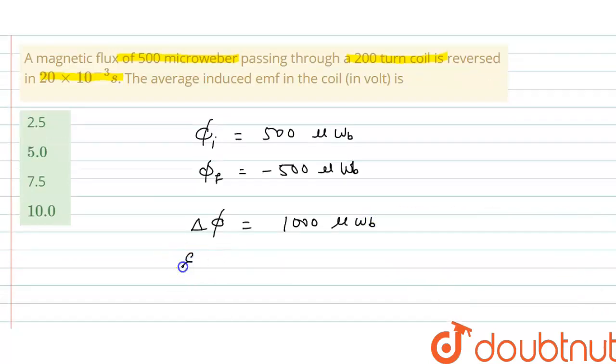So induced emf is equal to n into change in magnetic flux through one coil divided by time taken, where n is the total number of coils.